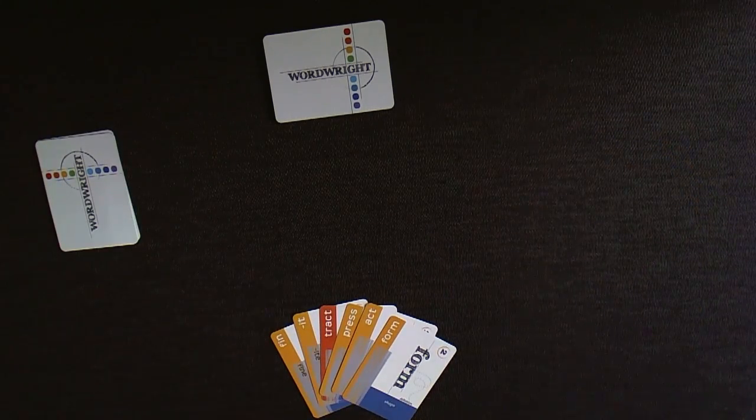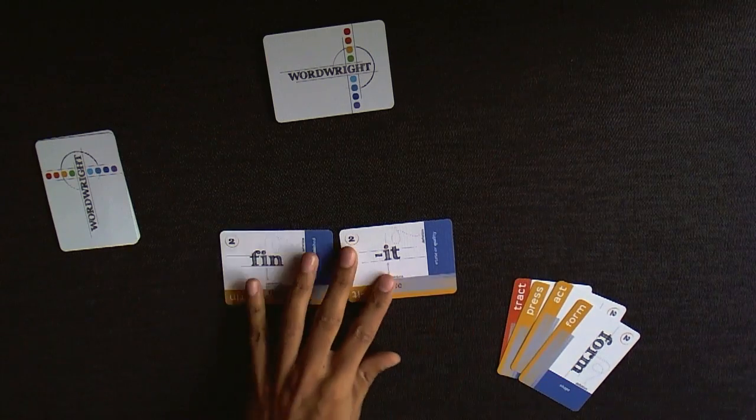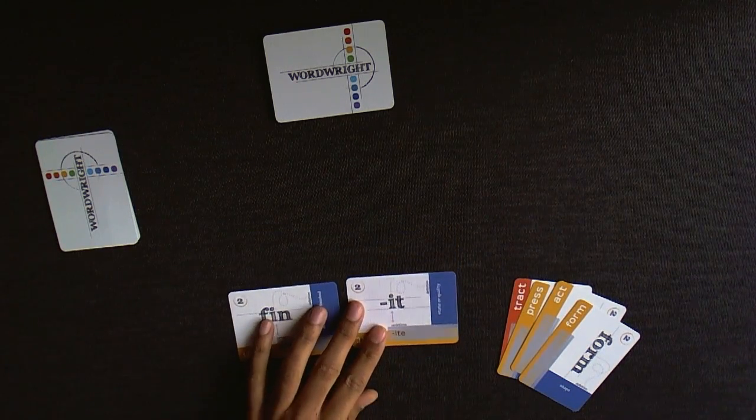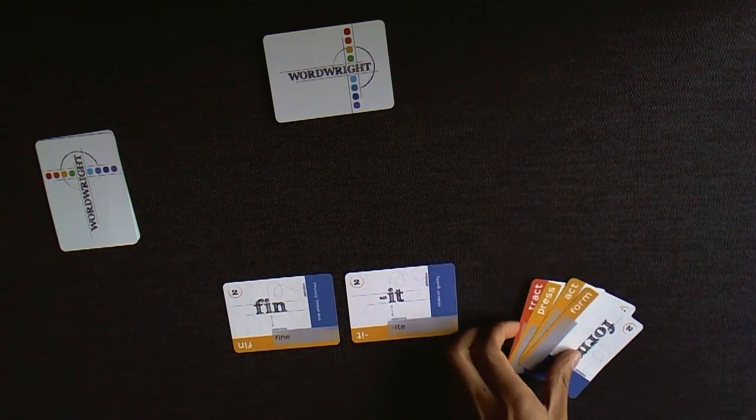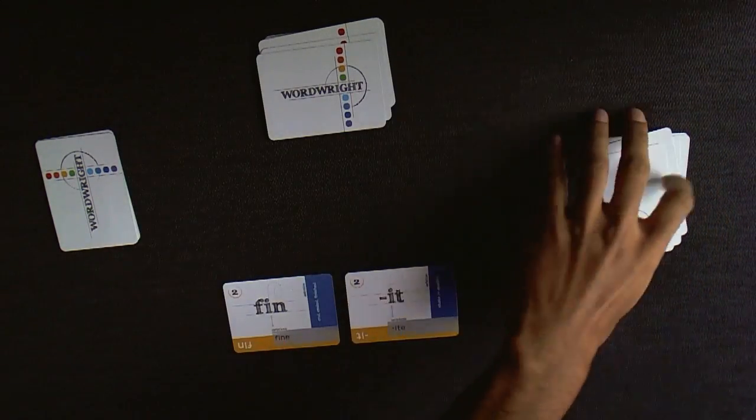Player one looks through his hand but doesn't have many options, so he makes finite. He lays out his cards adjacent to each other and scores the point values on the cards used to make the word. Two plus two is four. He refills his cards to six.